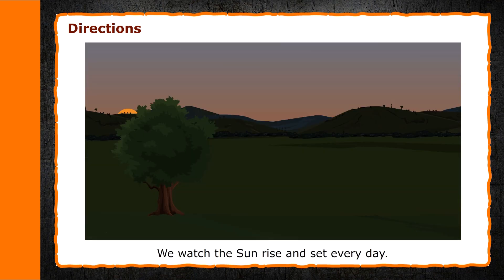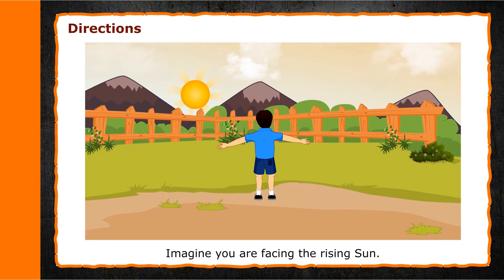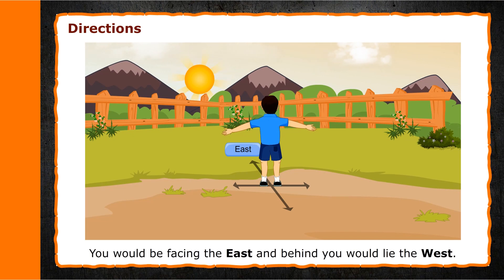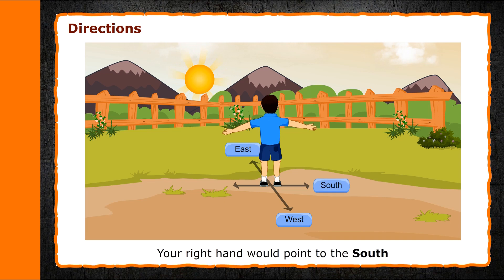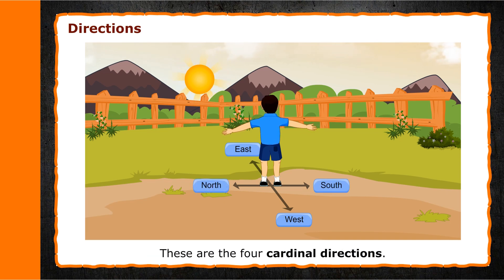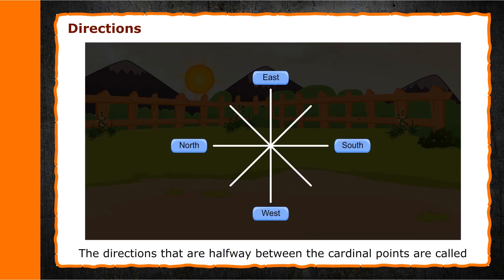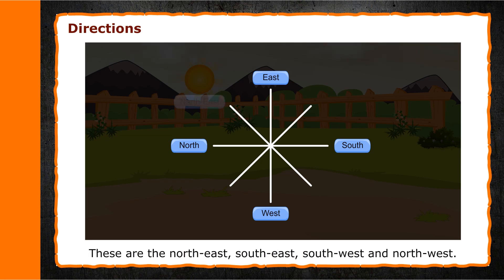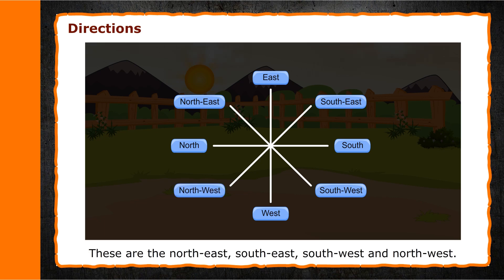Directions. We watch the sunrise and sunset every day. Imagine you are facing the rising sun — you would be facing the east and behind you would lie the west. Your right hand would point to the south and your left hand would point to the north. These are the four cardinal directions. The directions that are halfway between the cardinal points are called intermediate directions: north-east, south-east, south-west and north-west.